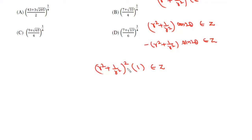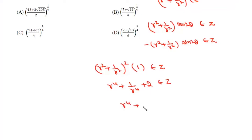So (R² + 1/R²)² must be an integer, which means R⁴ + 1/R⁴ + 2 must be an integer. Subtracting 2, R⁴ + 1/R⁴ must be an integer. So the given condition is satisfied when |Z|⁴ + 1/|Z|⁴ is an integer.